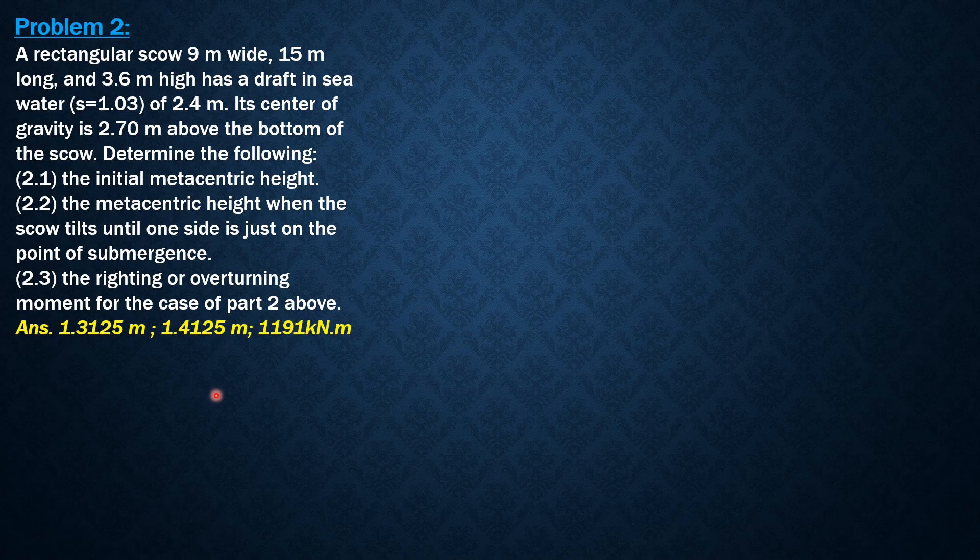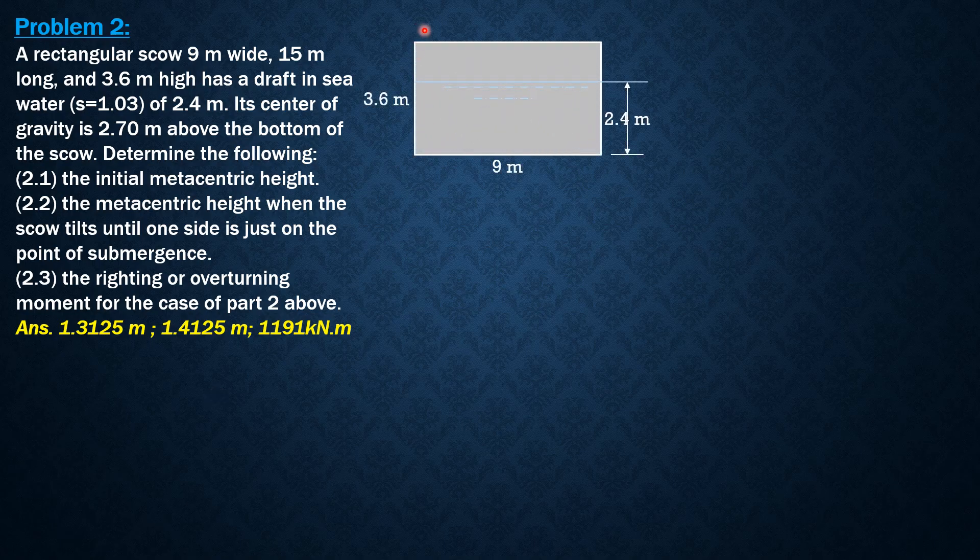Let's draw the details. B is the base width, 9 meters, then height 3.6, the draft 2.4 meters in seawater. For the initial metacentric height, let's locate the center of buoyancy first, which is